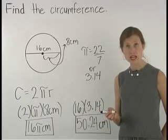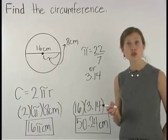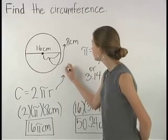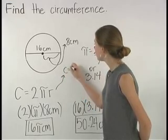It's important to understand that we could have also used the formula circumference equals pi d, since 2 times the radius is equal to the diameter.